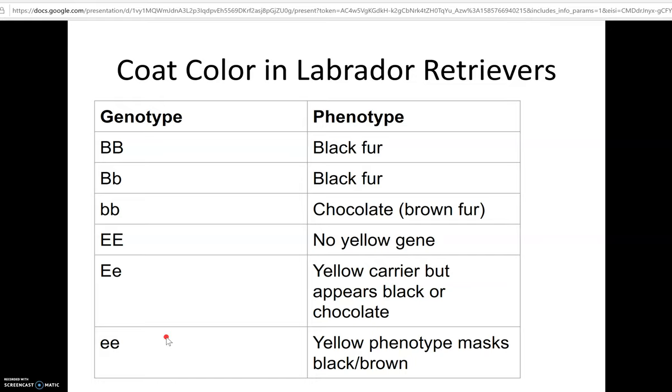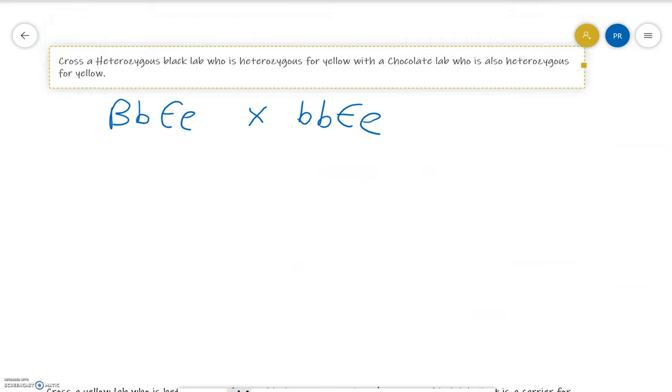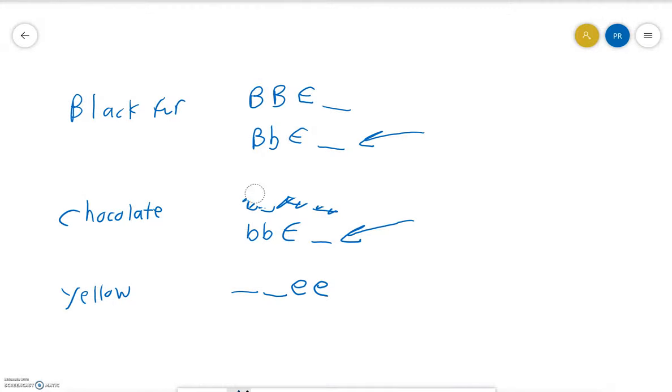Based on what I just told you, let me get rid of some of these annotations. To have black fur, you have to have at least one capital B, so you can be homozygous dominant BB or heterozygous Bb, and then at the E position you cannot be homozygous recessive. Being homozygous recessive would make it yellow, so anything could be at that second position. That's how you would have black fur to be a black Labrador Retriever.